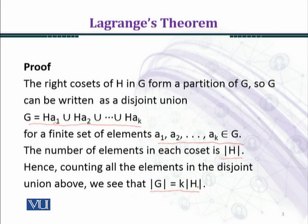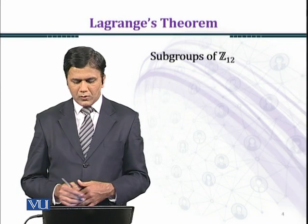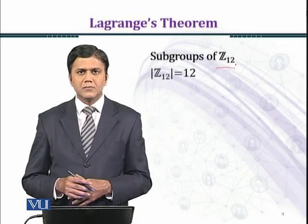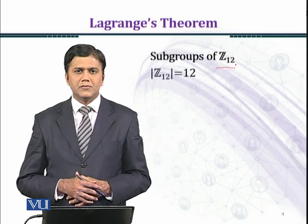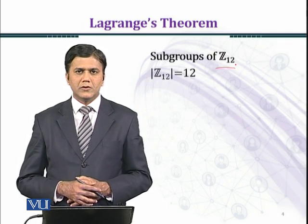So we have established Lagrange's theorem. Therefore, order of H divides order of G. Now we shall consider subgroups of Z₁₂. As you know that order of Z₁₂ is 12. There are 12 elements in the group Z₁₂.